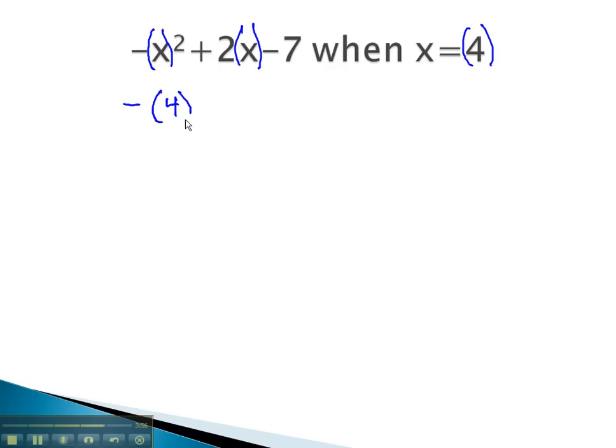This means we will replace each of the x's with a 4, giving us negative 4 squared, plus 2 times 4, minus 7. Notice as I make a substitution, the number always goes in parentheses. This way, I know when I'm squaring, does the negative come with or not the exponents.